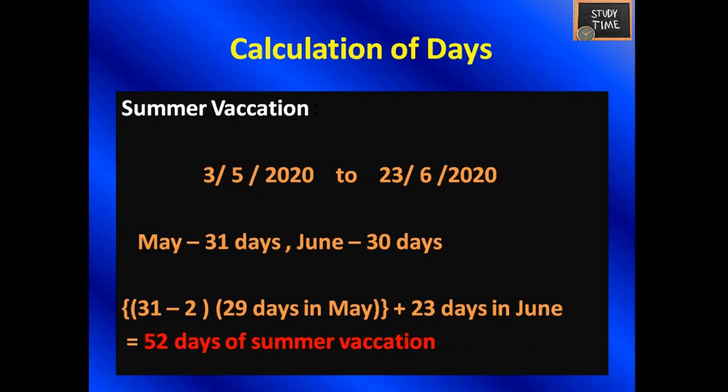Next, we are going to see calculation of days. Here we calculate the number of holidays in summer vacation. The holidays start on 3rd May 2020 and the school reopens on 24th June 2020, meaning the last holiday is 23rd June 2020. May has 31 days and June has 30 days. Holidays in May: 31 minus 2 equals 29 days. Holidays in June: 23 days. Total: 29 plus 23 equals 52 days of summer vacation. This is how you calculate the number of days when a from-date and to-date are given.